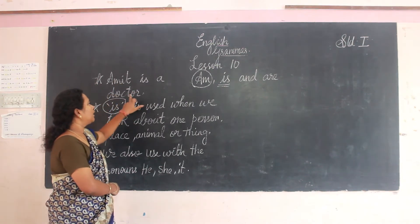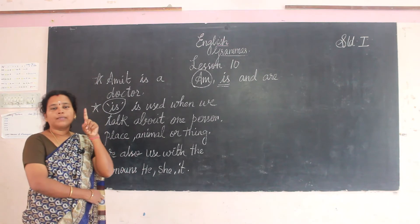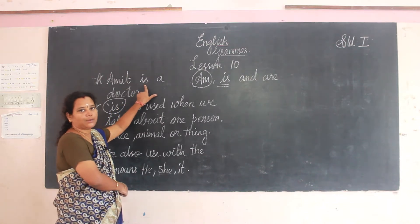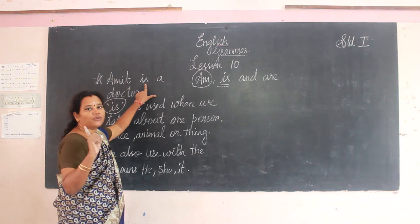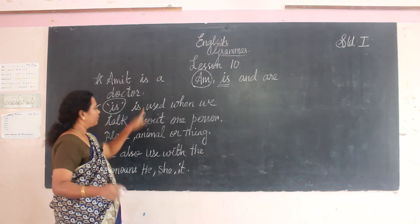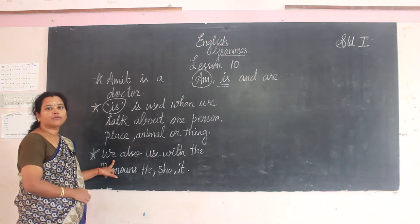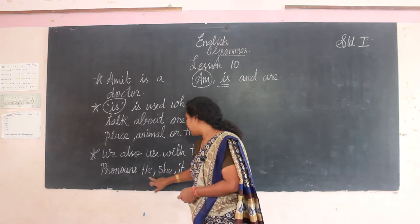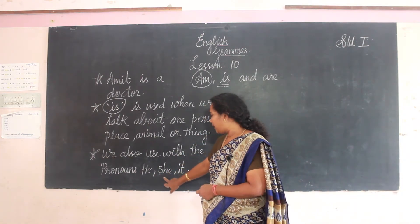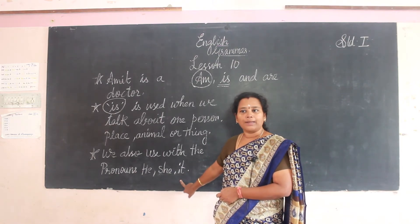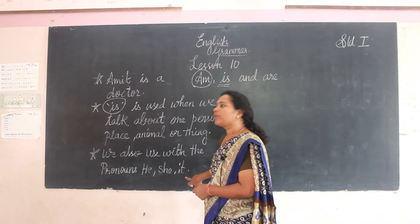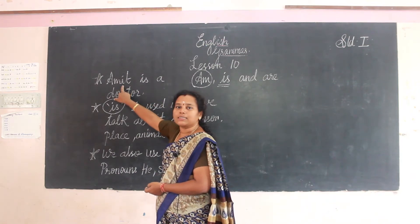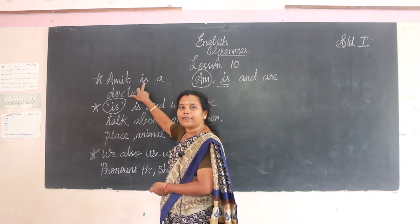See the example: 'Amit is a doctor.' Amit is one person, one man. He is a doctor. We can also use 'is' with the pronouns 'he', 'she', and 'it'. That means: 'He is a boy', 'She is a girl', 'It is a plant'. With these three pronouns also, we can use 'is'.